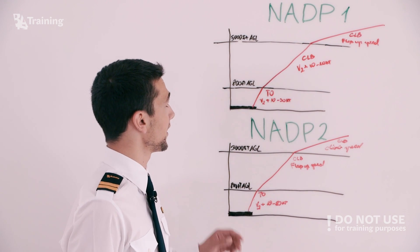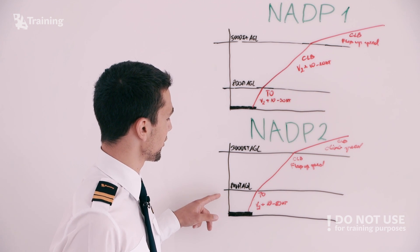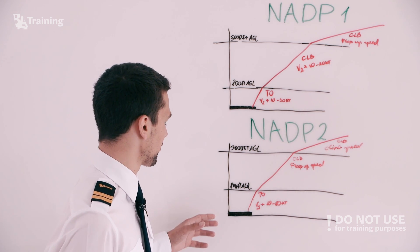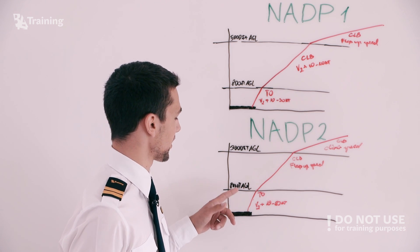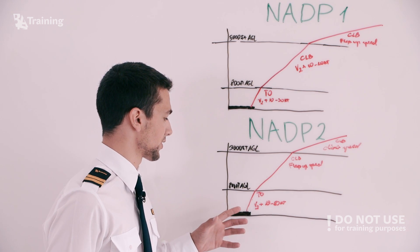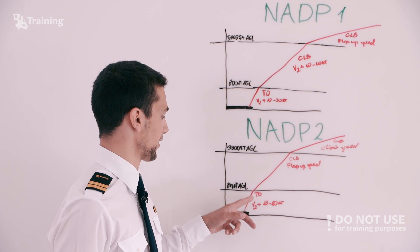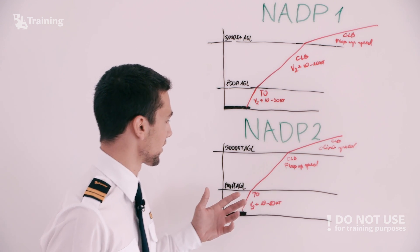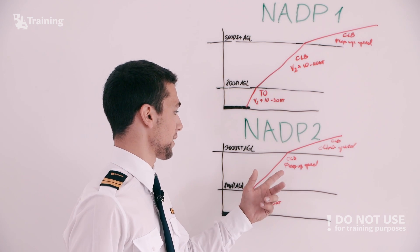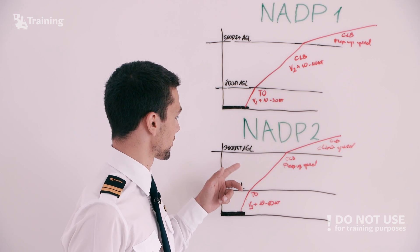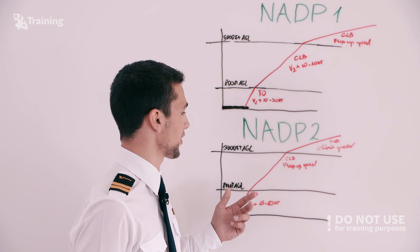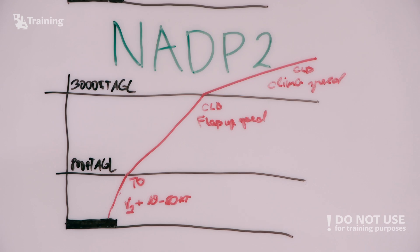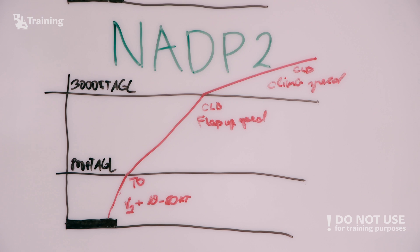The difference between NADP1 and NADP2 is that at 800 feet in NADP2 we have both the thrust reduction altitude and acceleration altitude. So when the aircraft reaches 800 feet it will change from takeoff power to climb power while at the same time pitching down to raise the speed to the flaps-up speed, and when it reaches 3,000 feet AGL it will continue acceleration to the normal climb speed. This procedure is used for overall noise reduction, usually when you want to reduce noise for areas which are further away from the airport.